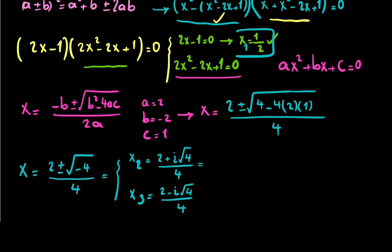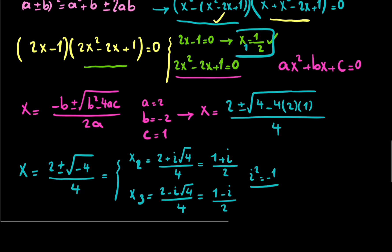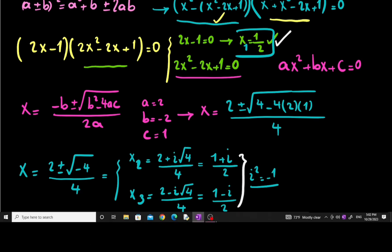The square root of 4 is 2, so the answers are x₂ equals (1 plus i) divided by 2, and x₃ equals (1 minus i) divided by 2. Recall that i squared equals negative 1. So in total, this equation has one real solution and two complex solutions.